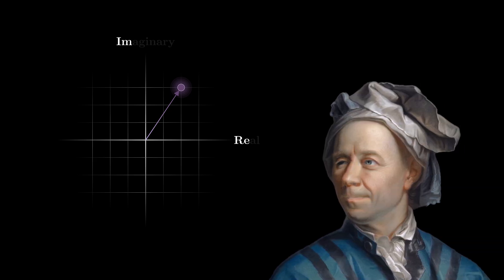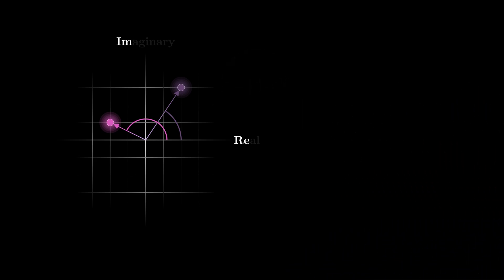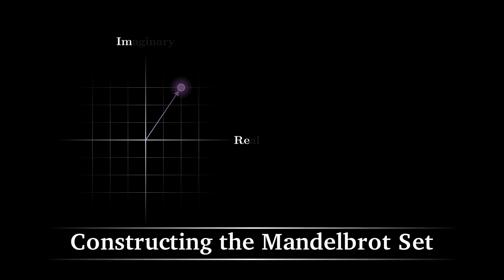According to Leonhard Euler, each complex number is also uniquely characterized by its angle and magnitude. Multiplication follows the simple and visual idea that when two complex numbers are multiplied, their angles are added together and their magnitudes are multiplied. These rules for addition and multiplication of two complex numbers are basically all we need to understand the construction of the Mandelbrot set.